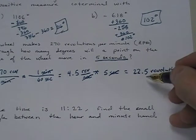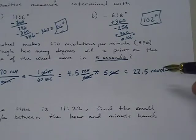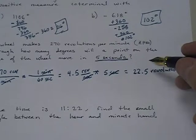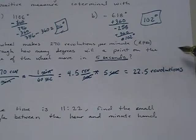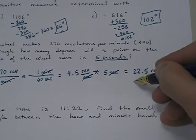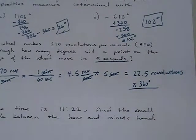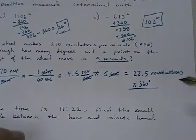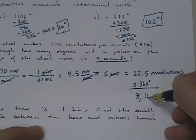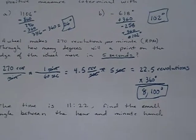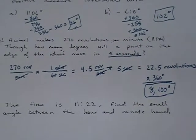They want to know how many degrees this thing has turned through. One revolution is 360 degrees, two revolutions is two times 360, so I multiply 22.5 revolutions by 360 degrees per revolution and come up with 8,100 degrees. That's how many degrees a point on the outside of this wheel has spun in five seconds.